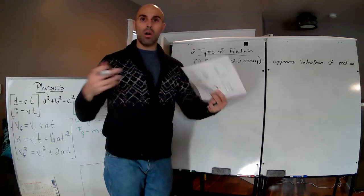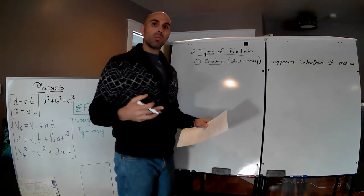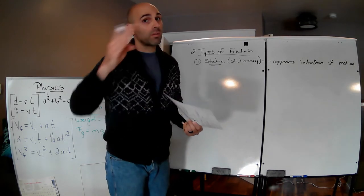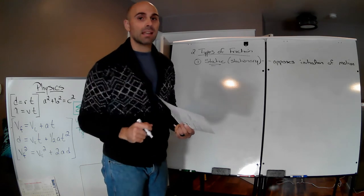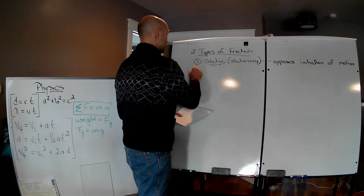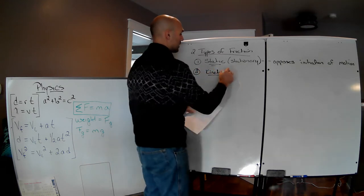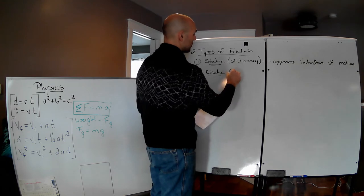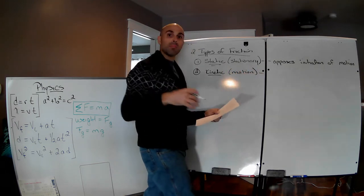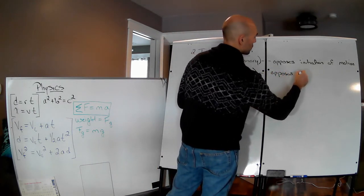The other type of friction is the friction of movement — the friction we all know and love. Think about kinetic energy. This is kinetic friction, and it is the friction of motion. It opposes current motion.